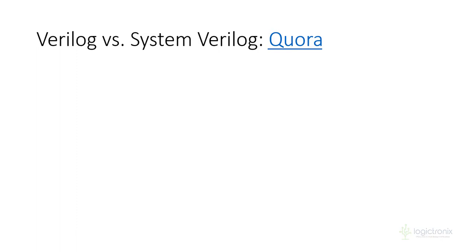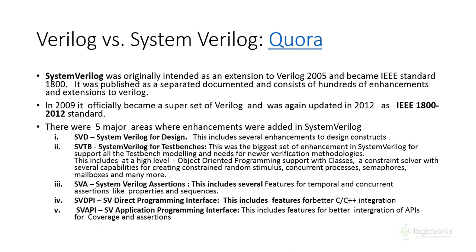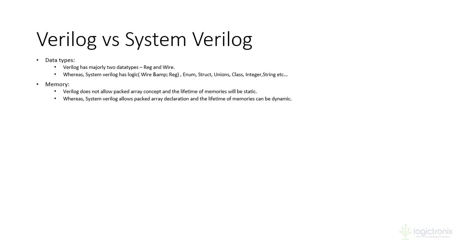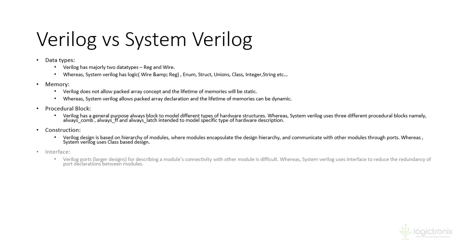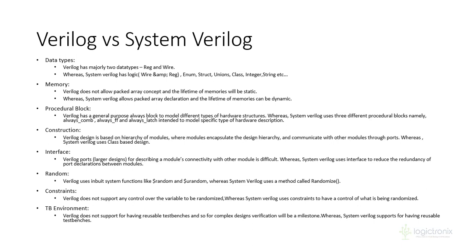Verilog has revisions up to 2005, and after that there is SystemVerilog. SystemVerilog is a superset of Verilog, and was initially intended to be an extension of the 2005 version of Verilog. After the revision completed, it became SystemVerilog. There are five major areas of enhancement: design, test benches, assertion interface, and programming interface. Updates include data types, memory access, procedural block updates, and random constraints.